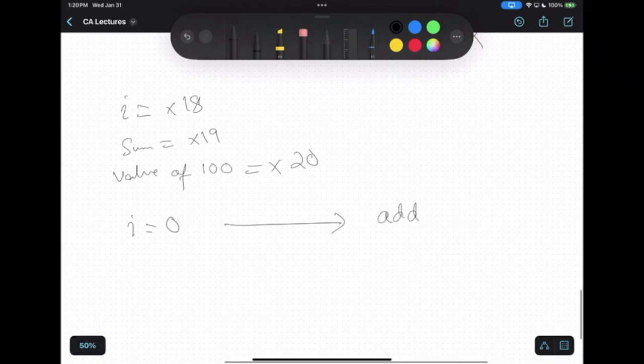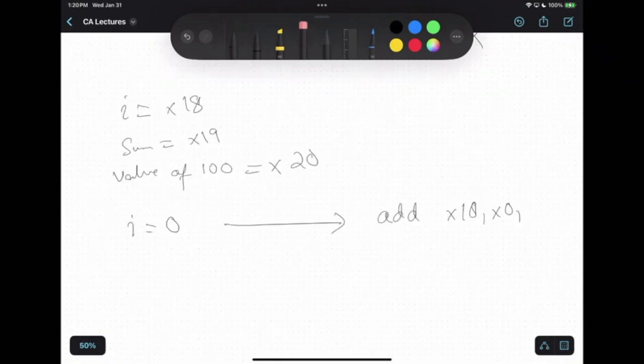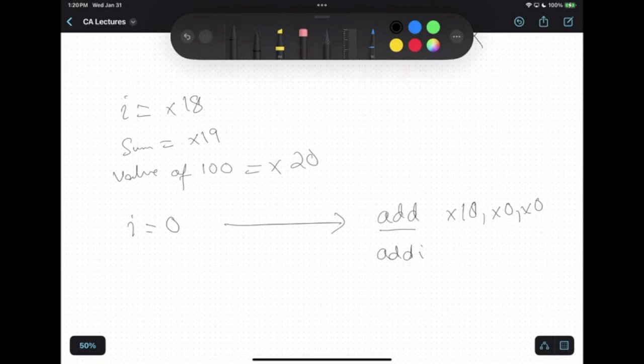Add, okay, x18, x0, and? And zero? If you are using add instruction, sorry, if you are using add instruction, both the operands must be a register. So you can initialize with x0. If you are using addi, then you can simply write x0 and then zero. This is a constant value. Okay? With this immediate. So both ways are correct.